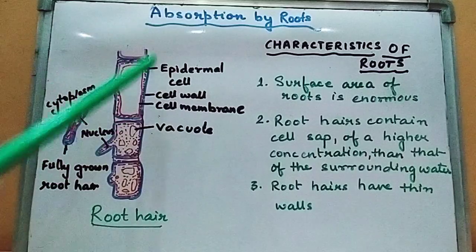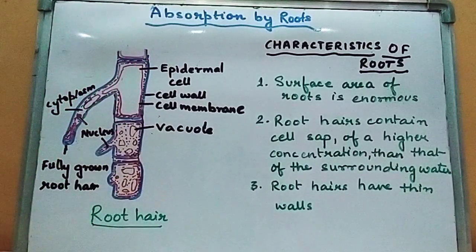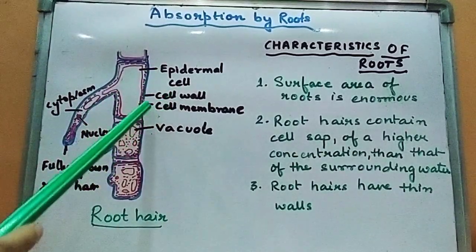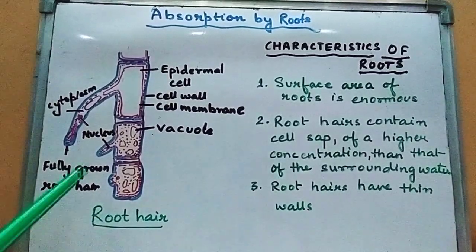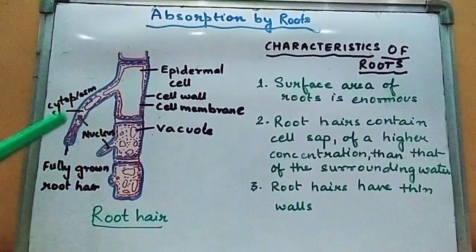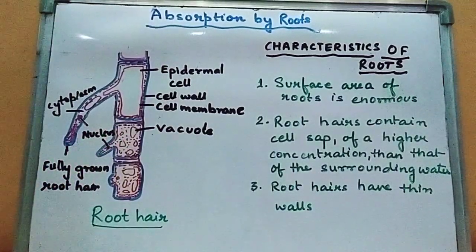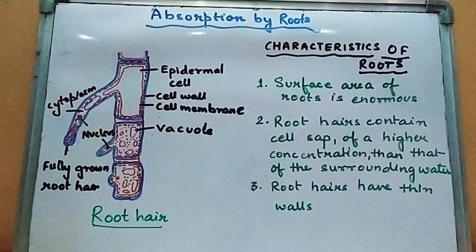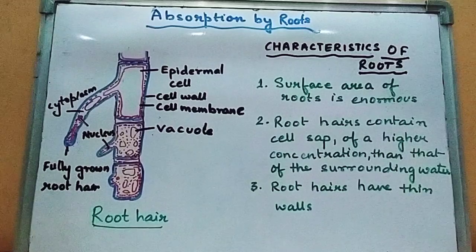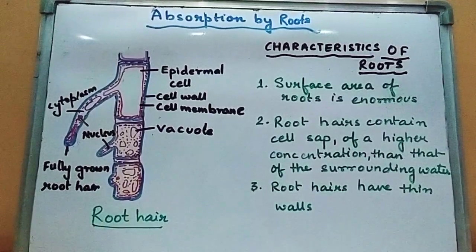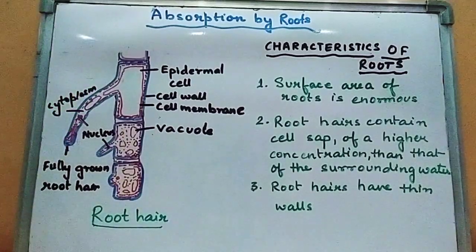This full structure is called epidermal cells. That elongation gives rise to the root hair. The outermost layer is the cell wall, the second one is the cell membrane, and you can see a vacant or empty sac-like structure — that fills up with cell sap and is called the vacuole. Plants have larger vacuoles compared to animal cells; animal cells sometimes have none.